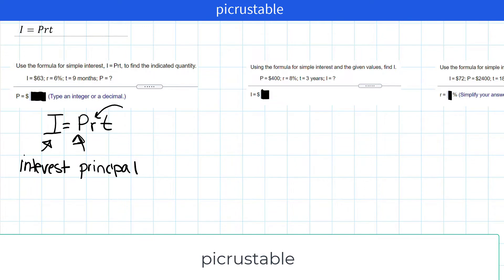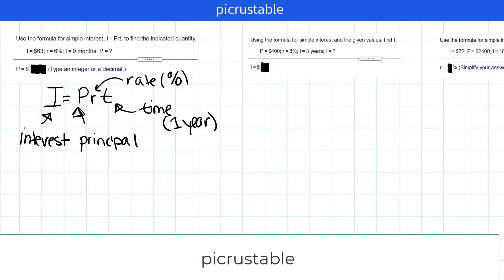This is my rate. It's also our percent. And finally T is the time, and the time is always based on one year. Alright, let's fill in what we know. They tell us that the interest is $63.